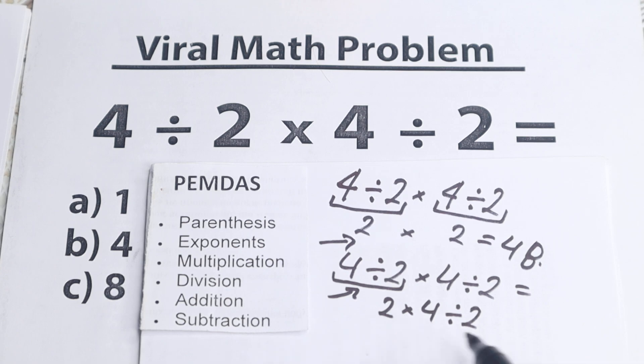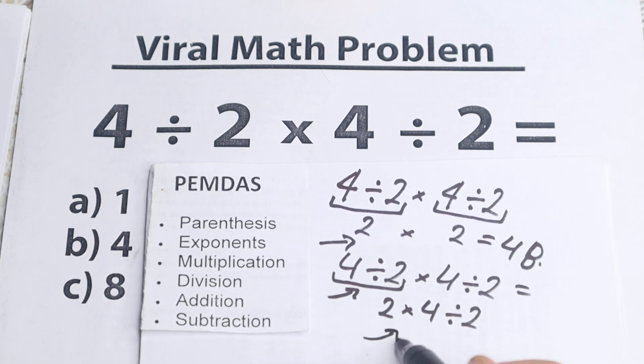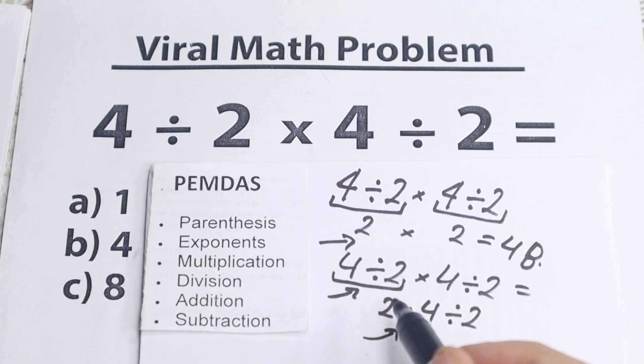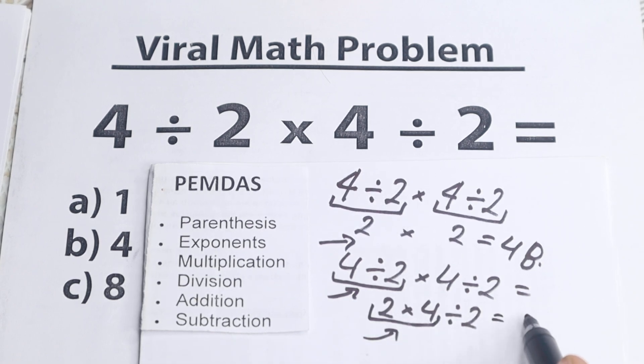And then we have 2 times 4 and divided by 2. Okay, we still have expression with multiplication and division part. And let's once more, let's look once more. What is the first sign from left to right? The first sign from left to right is this multiplication. So let's multiply. We will have like 8 and the last step divided by 2.